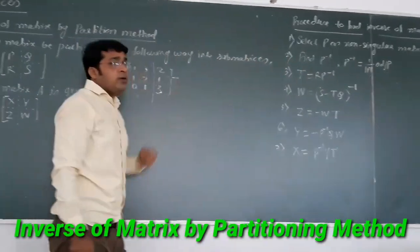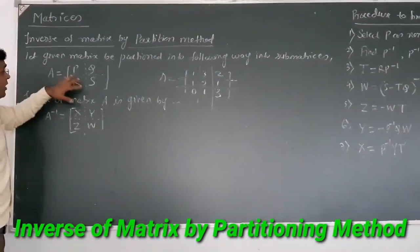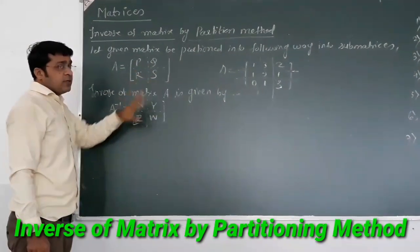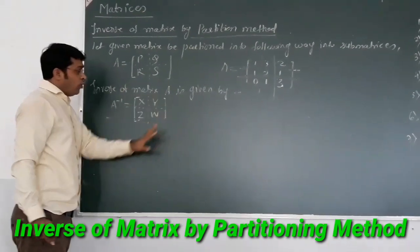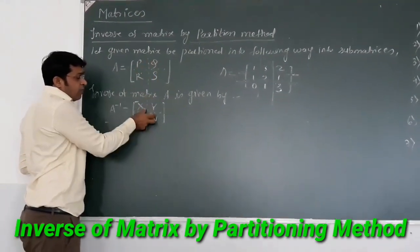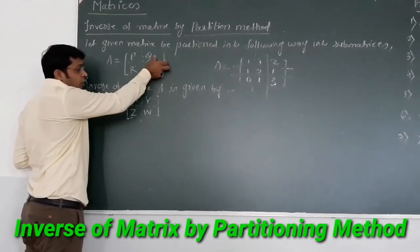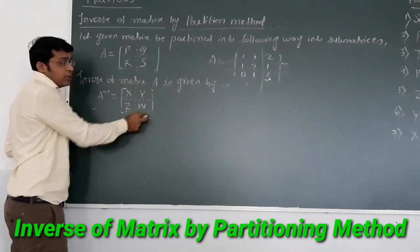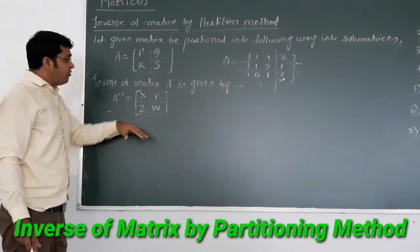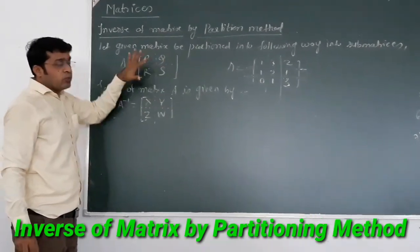That is why P should be a square matrix. After partitioning to P, Q, R, S, the inverse will be given by X, Y, Z, W. The order of P and order of X will be same, order of Q and Y will be same, same as R and Z, and S and W. Their order will be same.